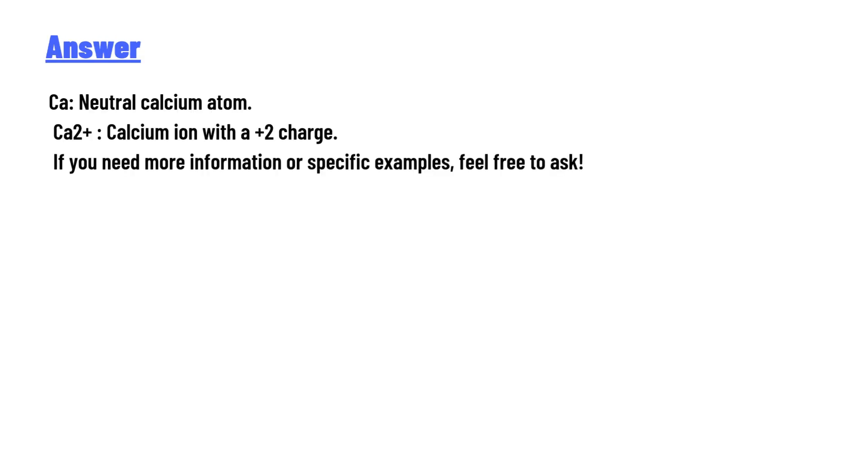The answer of the question is: Ca is a neutral calcium atom. Ca2 plus is a calcium ion with a plus 2 charge. If you need more information or specific examples, feel free to ask. So that's the correct answer of the question.